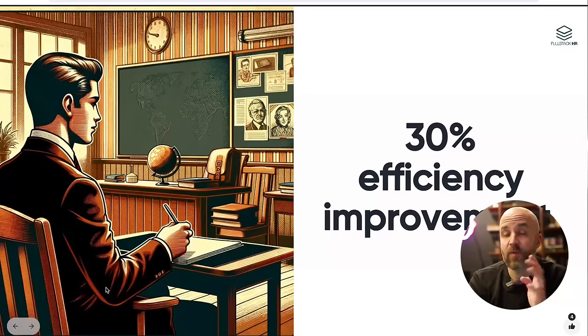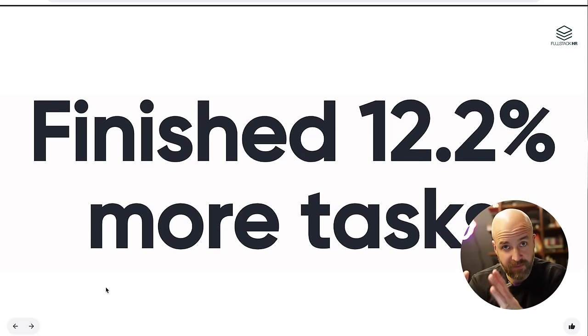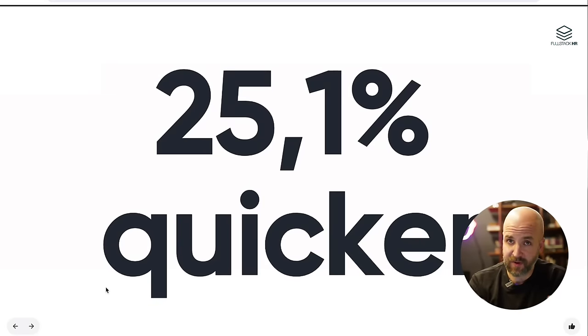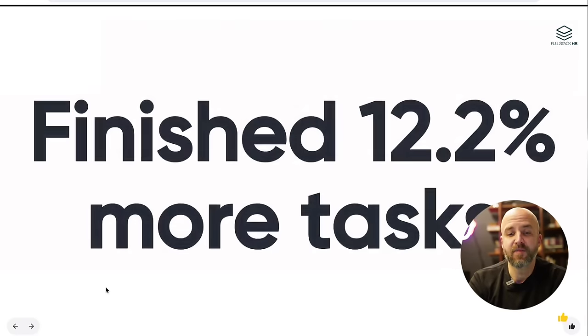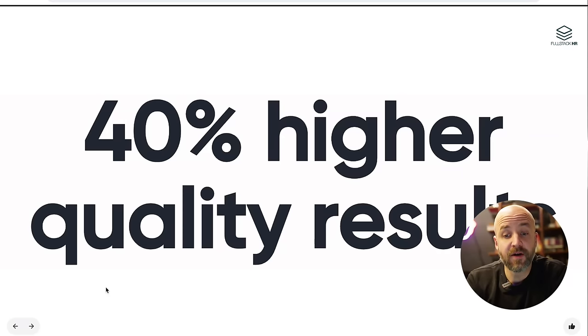We do actually have one scientific study called the Jagged Frontier. It's a Harvard study. They did a study on BCG consultants where they said to one group, you really need to use ChatGPT in everything that you do. All tasks that you do, please use ChatGPT. And then they said to another group, never use ChatGPT. You are not allowed to use AI at all. Then they compared the two groups. The group who used ChatGPT finished 12.2% more tasks on average. They did it roughly 25% quicker as well. Not only did they complete more tasks, they also did them quicker, and they did that with 40% higher quality results.